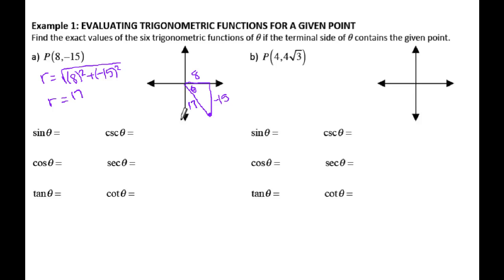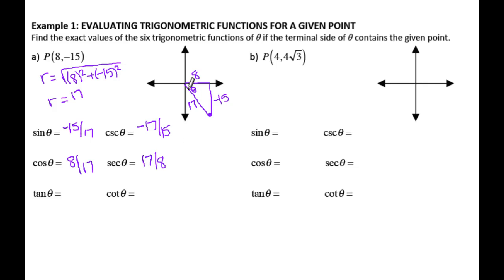Sine is opposite over hypotenuse, so that's negative 15 over 17 — the same thing as y over r. Cosecant is the reciprocal of that, so negative 17 over 15. Cosine is adjacent over hypotenuse, so that's 8 over 17, equivalent to x over r. Secant is the reciprocal of that. Tangent is opposite over adjacent, so negative 15 over 8, the same as y over x. Cotangent is the reciprocal, so negative 8 over 15. Those are your six trig ratios for the point (8, -15).